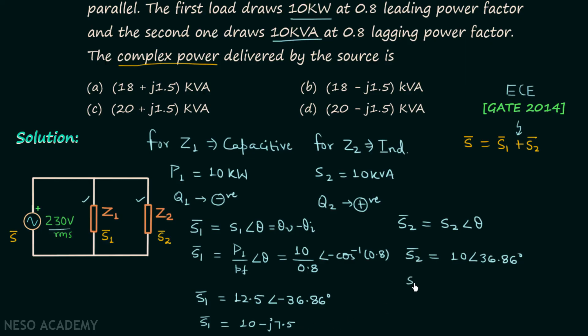Following the same process, when you have the rectangular form of S2, you will find it is 8 plus j6. Now add them and you will have the complex power equal to 18 minus j1.5, and the unit will be KVA. This means option B is the correct option.